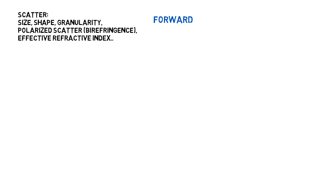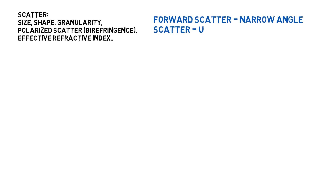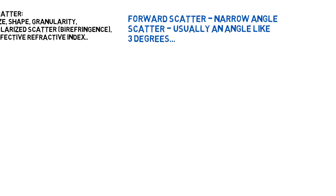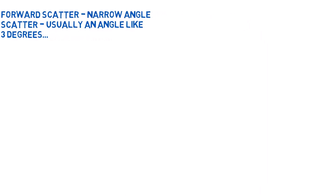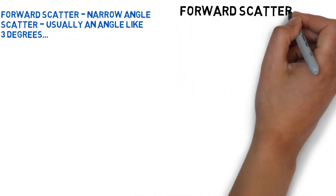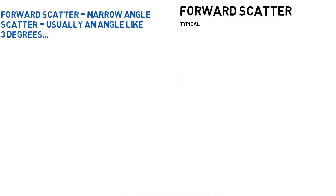First, let's talk about forward angle scatter, which is also called narrow angle or FALS, F-A-L-S. We mostly collect this at about 3 degrees angle off the laser beam. FALS signal strength is very large — it can be 100,000 to 1 million times the intensity of the fluorescence signal.